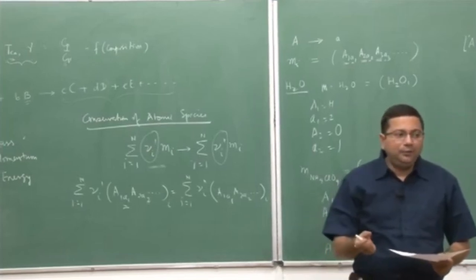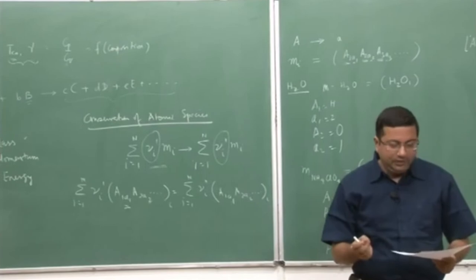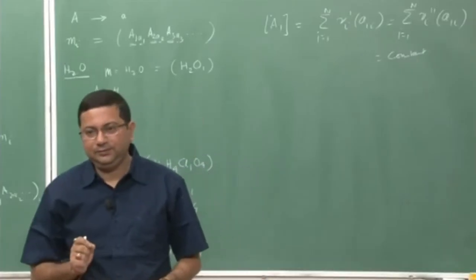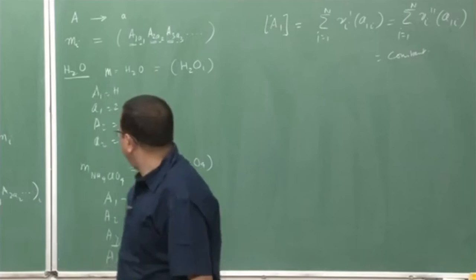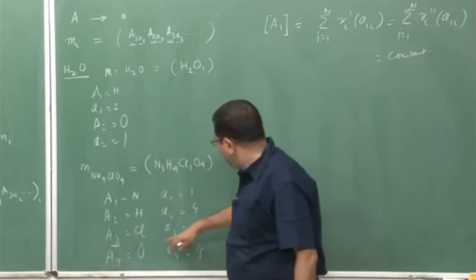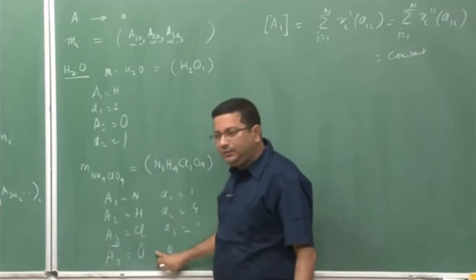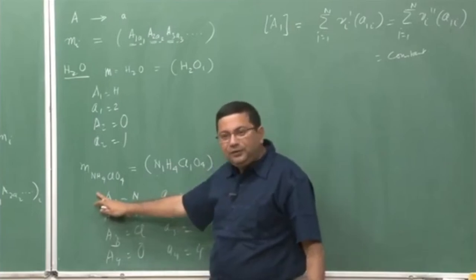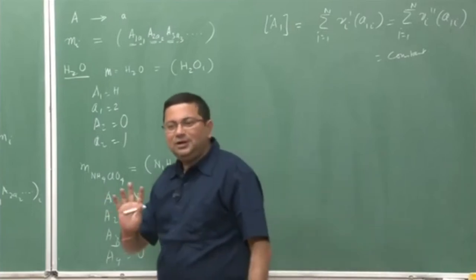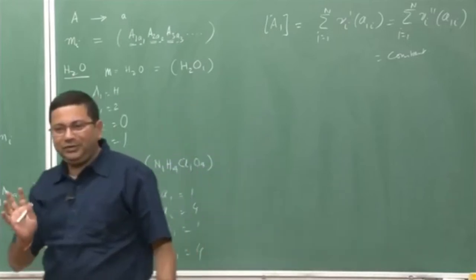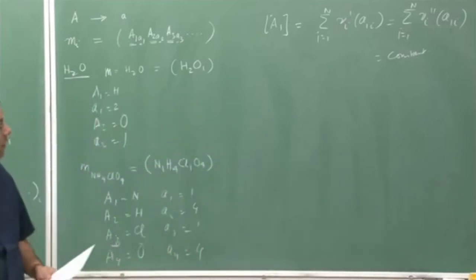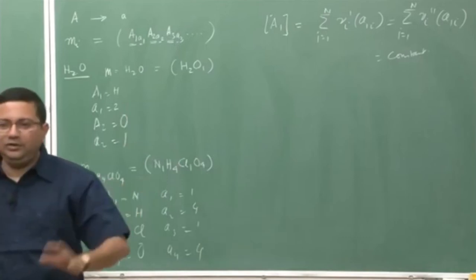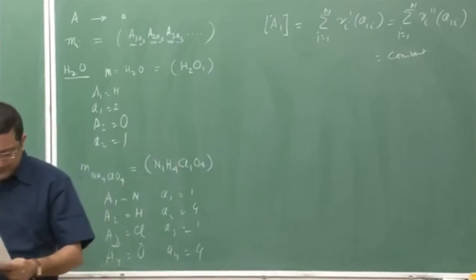If we have n atomic species in a combustion system, we can construct n algebraic equations for those n atomic species and solve for the composition. However, the problem is that there may be more or fewer molecular species than n. For example, ammonium perchlorate has four atomic species but only one molecular species. This puts a restriction on the solution procedure — we will not have enough equations, so we need additional equations, which we will discuss later.